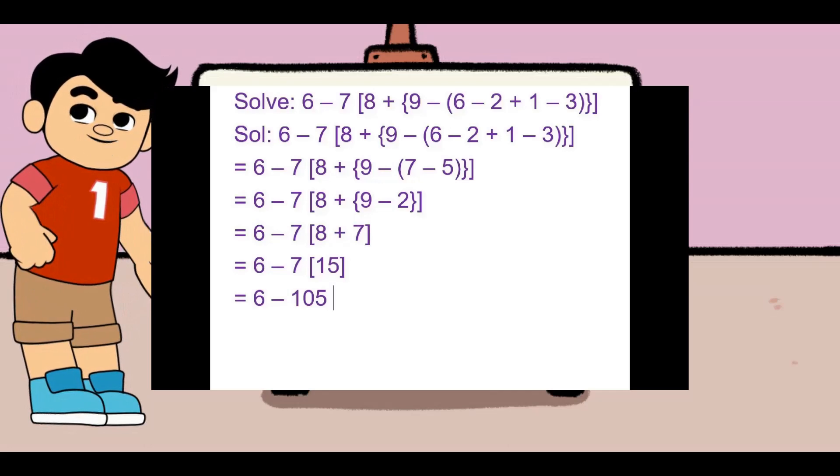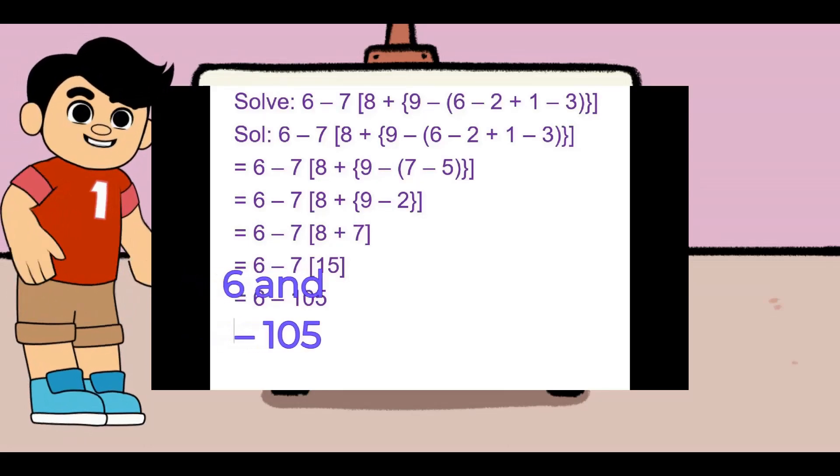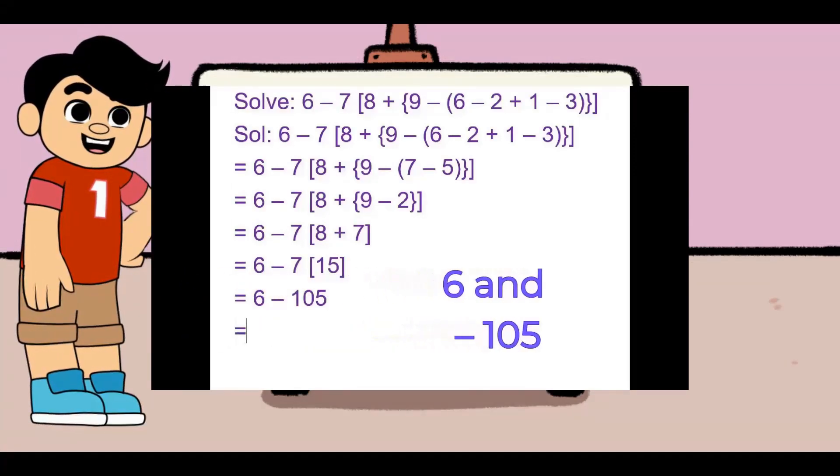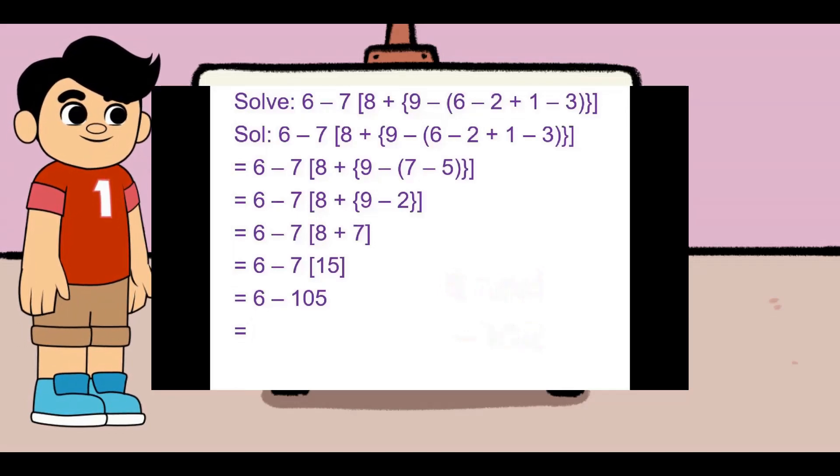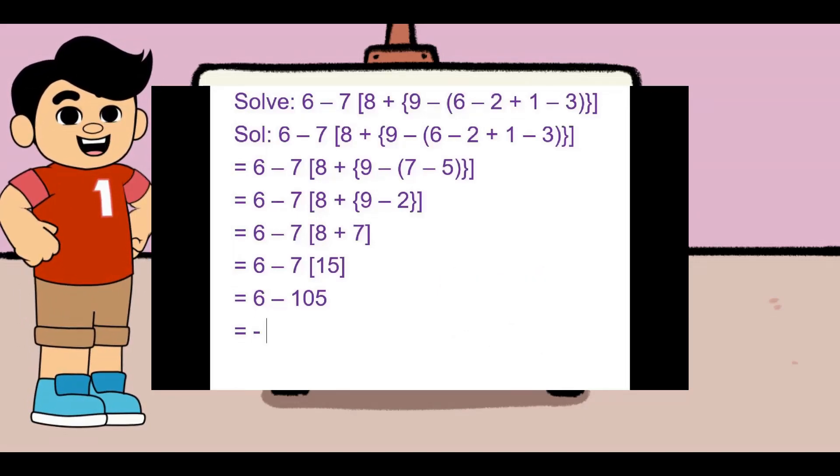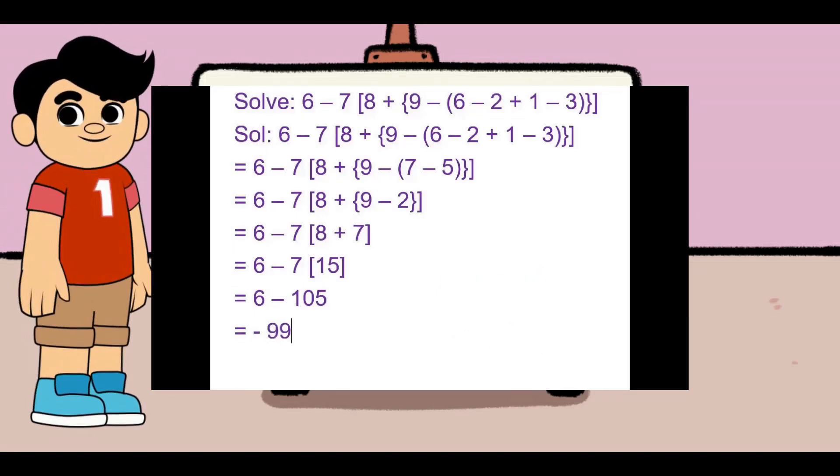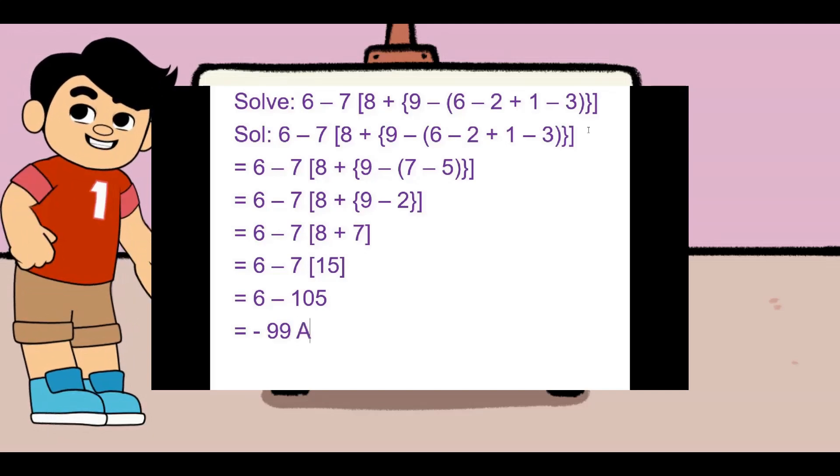We have solved all the brackets. And now we have the positive number 6 and the negative number 105. Here the negative numbers are 99 more than the positive numbers. Hence the answer is negative 99.